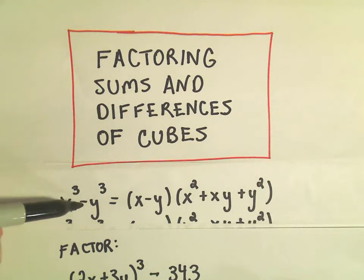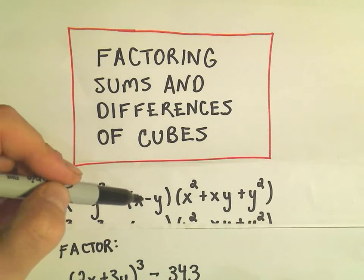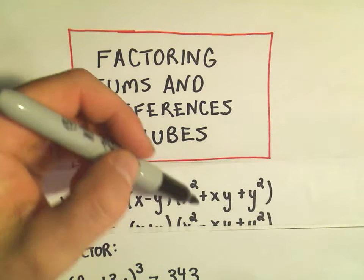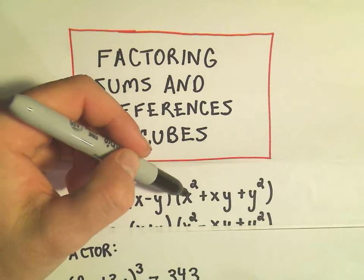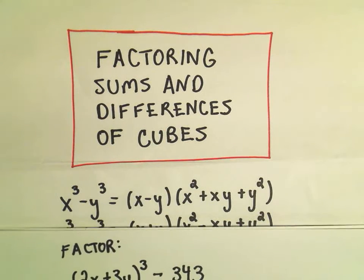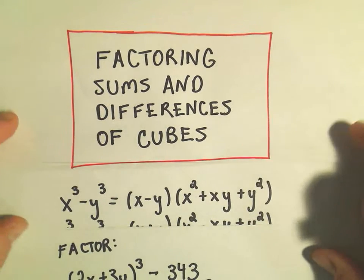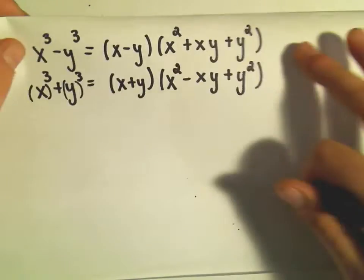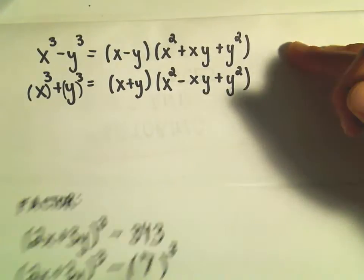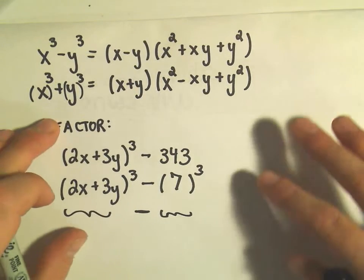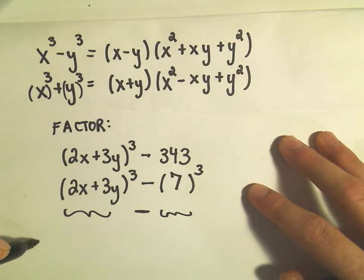That says if you have something cubed minus something cubed, take the first thing minus the second thing, the things that are being cubed that is. And then take the first thing and square it, multiply them and square the last one. It's a little more confusing here because we have this bigger expression in our first set of parentheses, but I think we can manage it.